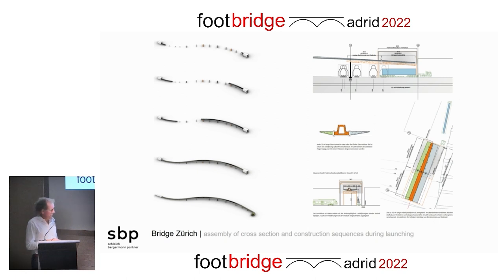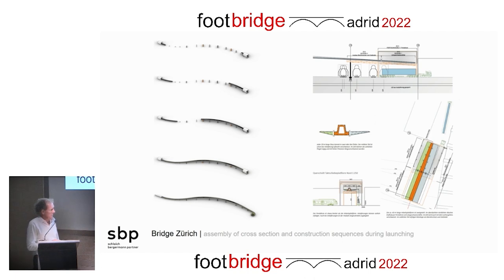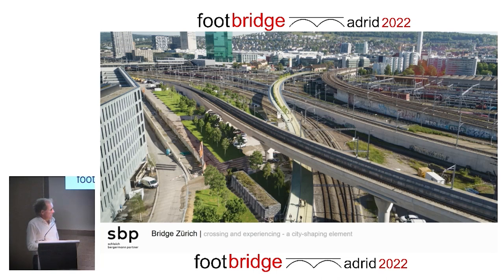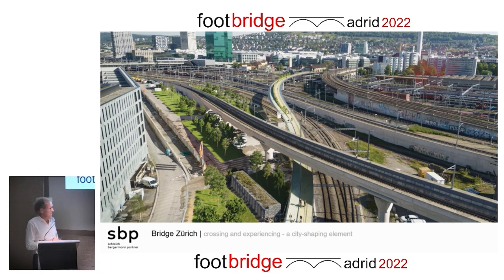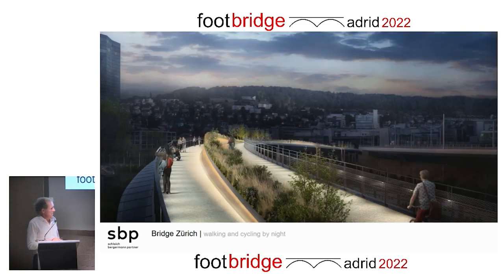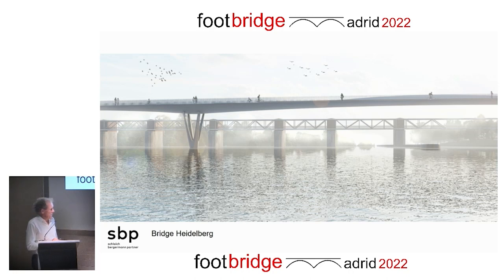The construction was a very tough task. We used a launching system, assembling three parts of the bridge on site and then launching from either side — touching the rails as little as possible. Once again the bridge as a city-shaping element: it's not boring to walk or cycle the 600 meters — you have something in between, some greenery, an open view to either side, and you see a little more of Zurich. By night, our lighting designer Christian Sander did a lot of nice work.